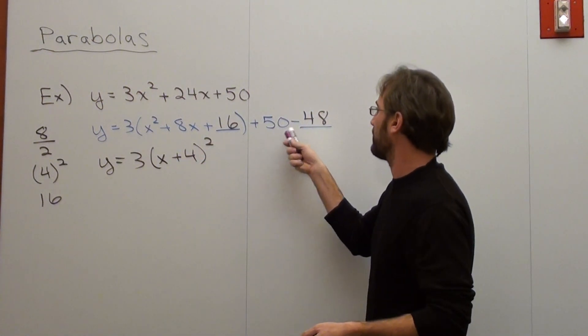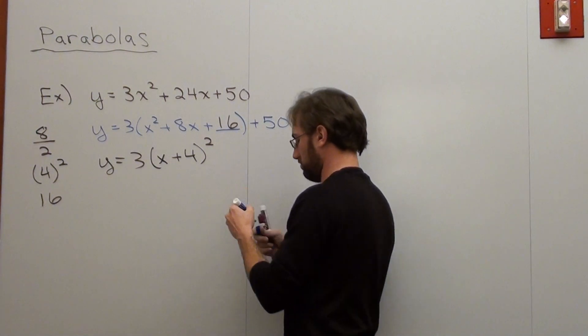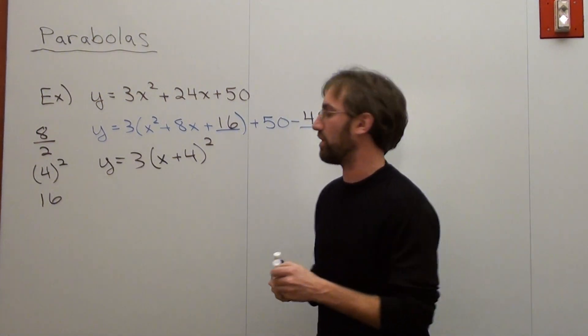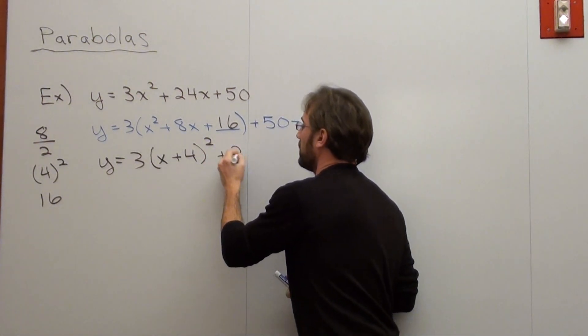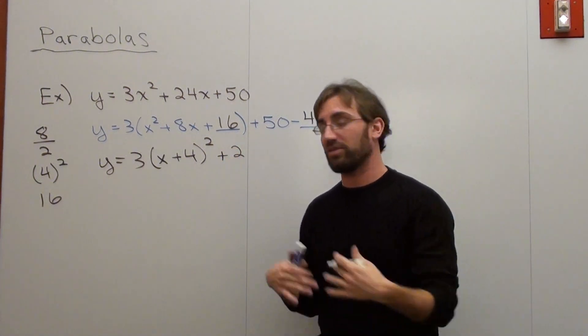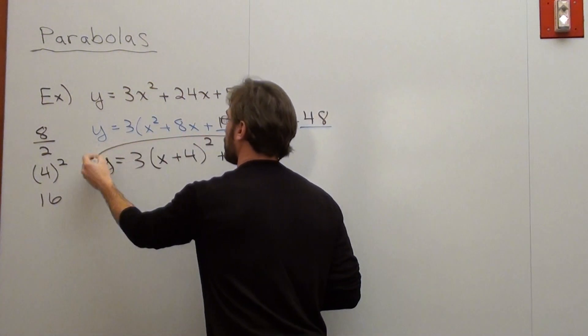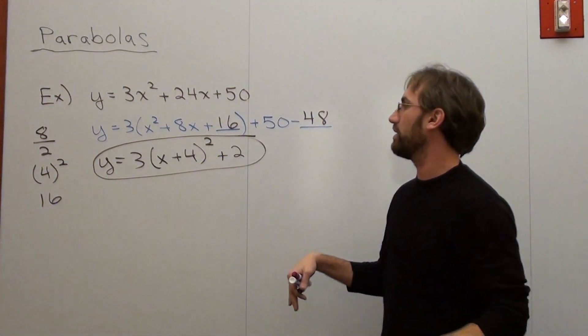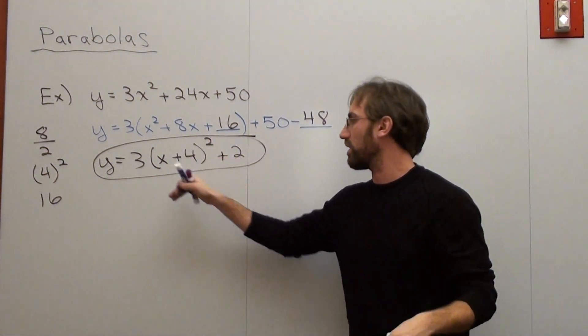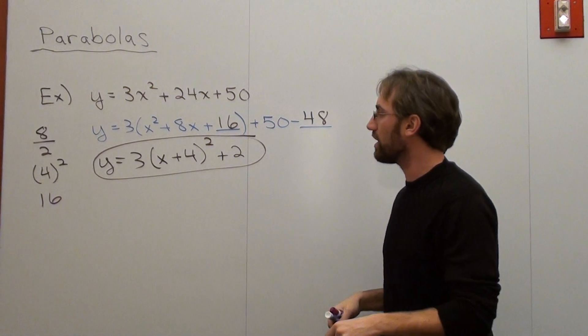Okay. Now what I have is 50 minus 48, which is 2. And there you go. You've got the form of your parabola right here. Y equals 3 times the quantity x plus 4 squared, times 3 plus 2.